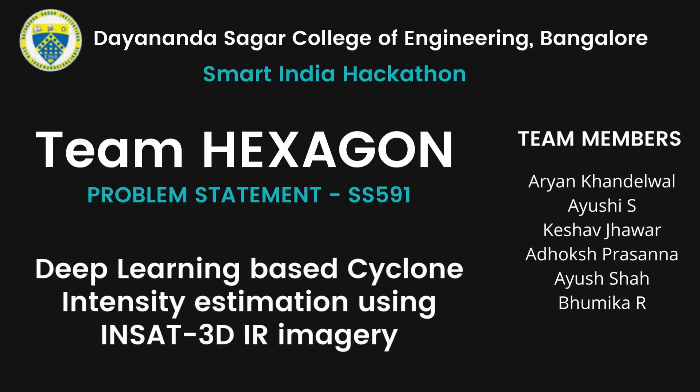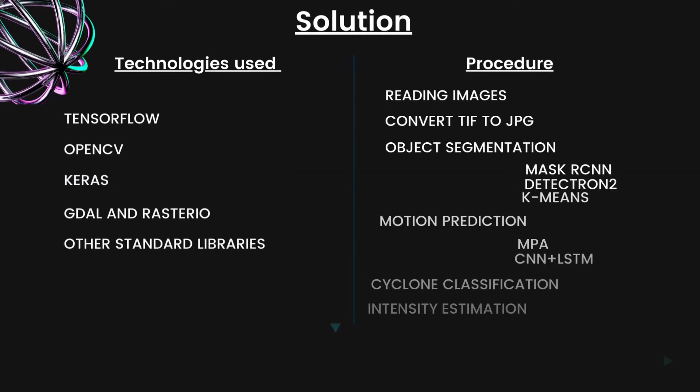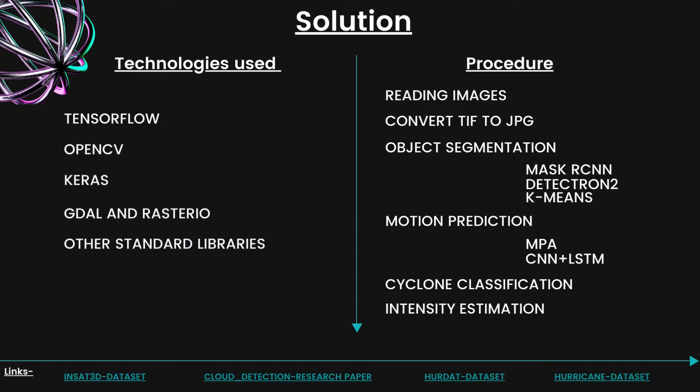Hello and welcome everyone. This is team Hexagon and we have our problem statement SS591: deep learning based cyclone intensity estimation using INSAT 3D IR imagery. The major technologies we use are TensorFlow, OpenCV, Keras, GDAL, and RASRIO.